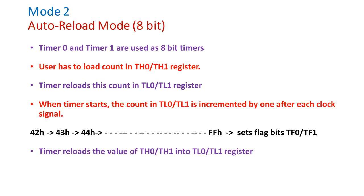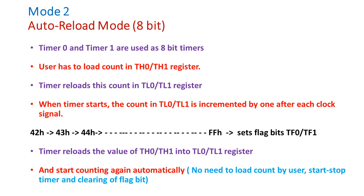Continuously the timer generates a delay or increments the count automatically. It is not like Mode 1, where the user has to load the count in the count register for every cycle. It starts counting again automatically because the count is preserved in the TH register — no need to load the count, start the timer, or clear the flag bit again and again.